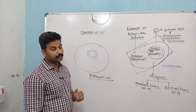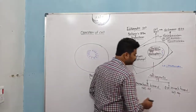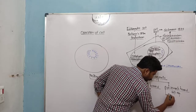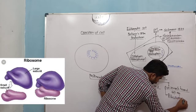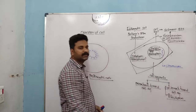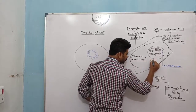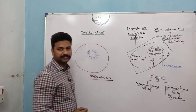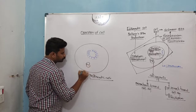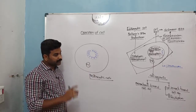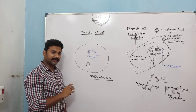Non-membrane-bound cell organelles include ribosomes. Ribosomes are non-membrane-bound cell organelles present in both eukaryotic and prokaryotic cells. However, the ribosomal structure in eukaryotic cells is different from that in prokaryotic cells. We will have a separate video lecture on this topic.